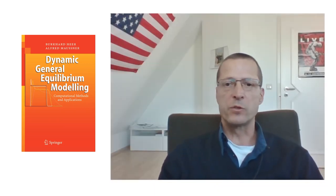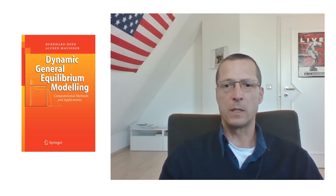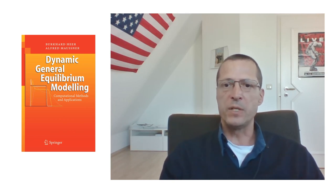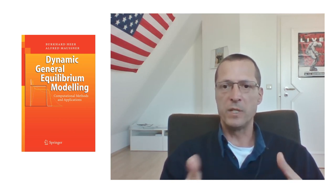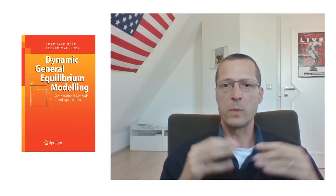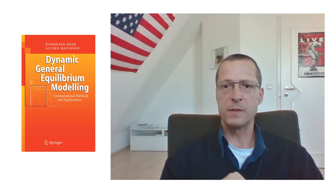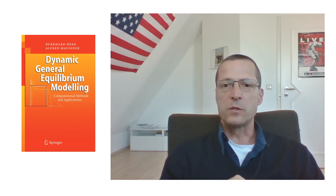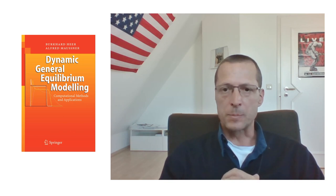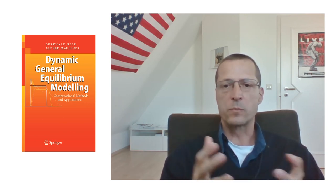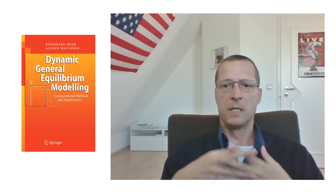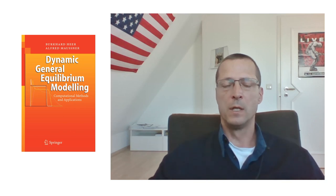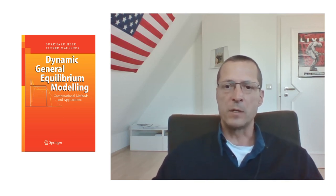Hello and welcome back to the second part of our video tutorial on the Auerbach-Kotlikoff Model. We have analyzed a 60-period overlapping generations model where each period corresponds to one year, so we have 60 different cohorts alive in each period and we studied the steady state. Therefore, we had to solve the individual optimization problems, which was a complex problem describable with 99 nonlinear equations and 99 unknowns, and we used the Newton-Raphson algorithm to solve it.